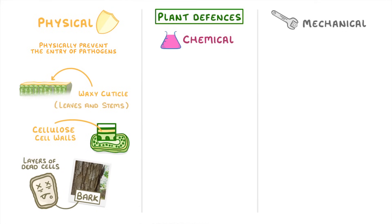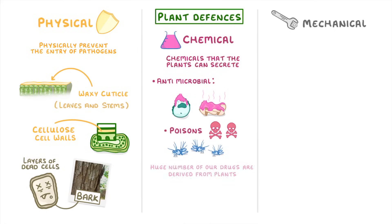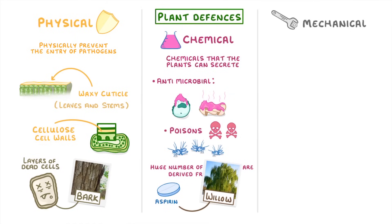Meanwhile, chemical defences refers to actual chemicals that the plants can secrete. These could be antimicrobial substances, which kill bacteria or fungi, or poisons that deter or kill insects. Plants actually make so many different chemicals that a huge number of our drugs are derived from plant chemicals, including the common painkiller aspirin, which comes from the bark and leaves of willow trees.